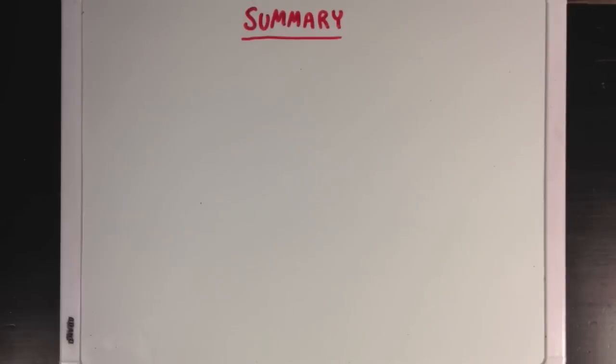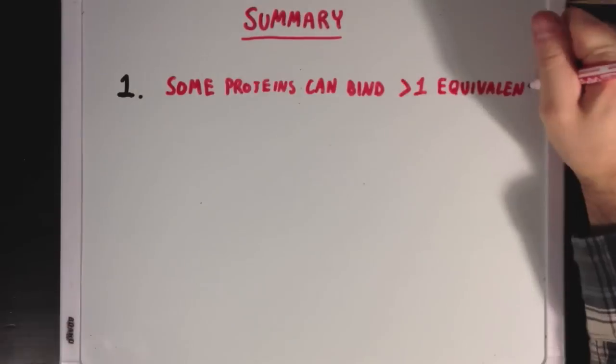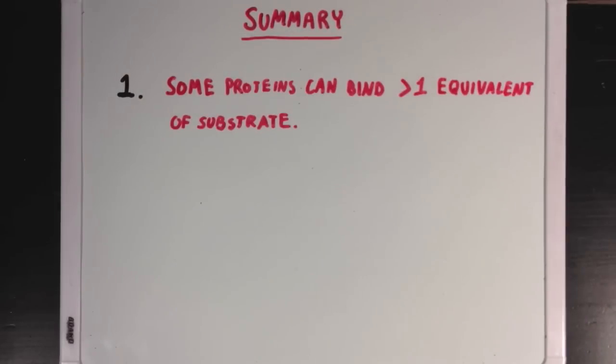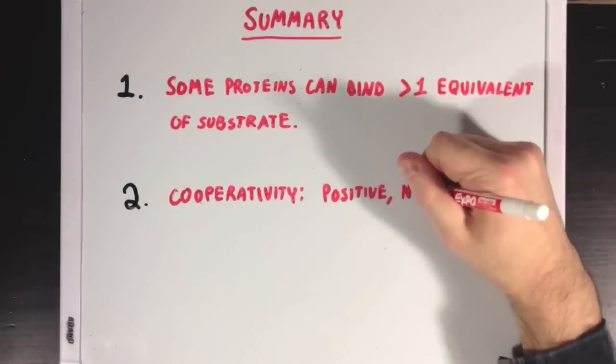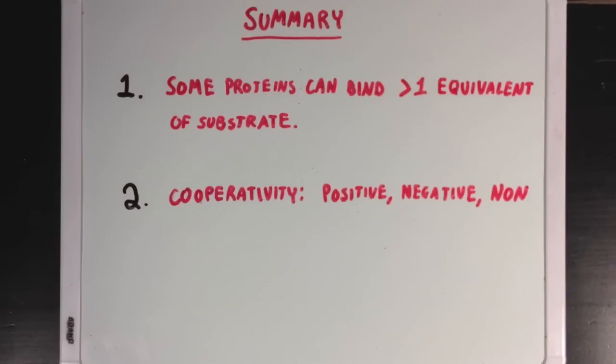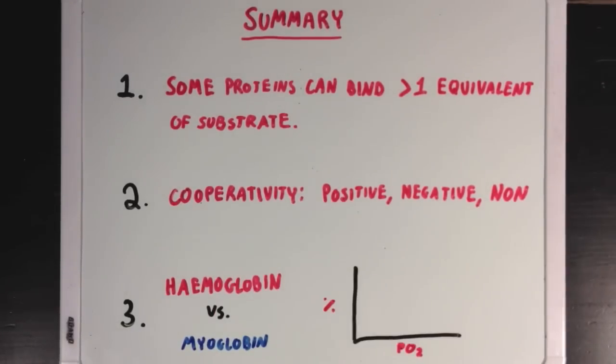So, what did we learn? First we learned that some proteins can bind more than one equivalent of substrate. Next, we learned that there are three different types of cooperativity—positive, negative, and non-cooperative. Finally, we learned about proteins that exhibit two different types of cooperativity, which are the oxygen-binding molecules hemoglobin and myoglobin.